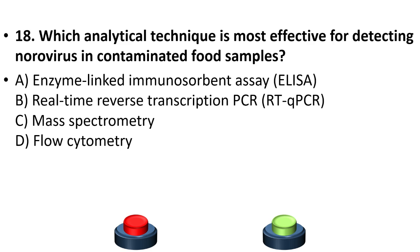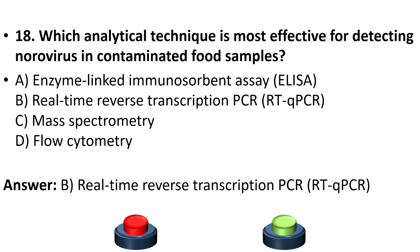Question 18: Which analytical technique is most effective for detecting norovirus in contaminated food samples? Options: enzyme-linked immunosorbent assay (ELISA), RT-PCR, mass spectrometry, flow cytometry. The answer is option B, RT-PCR (Q-PCR).